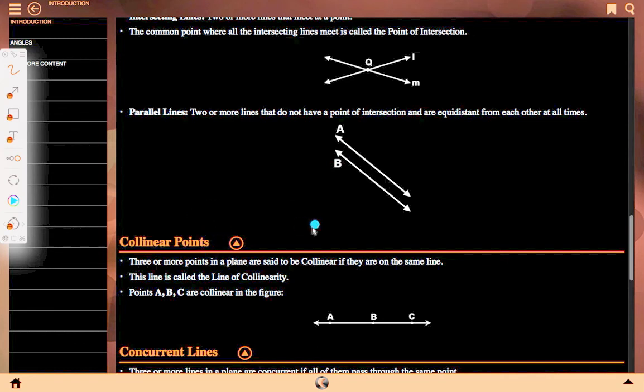Collinear points: Three or more points in a plane are said to be collinear if they are on the same line. This line is called the line of collinearity. Points A, B, C are collinear in the figure.